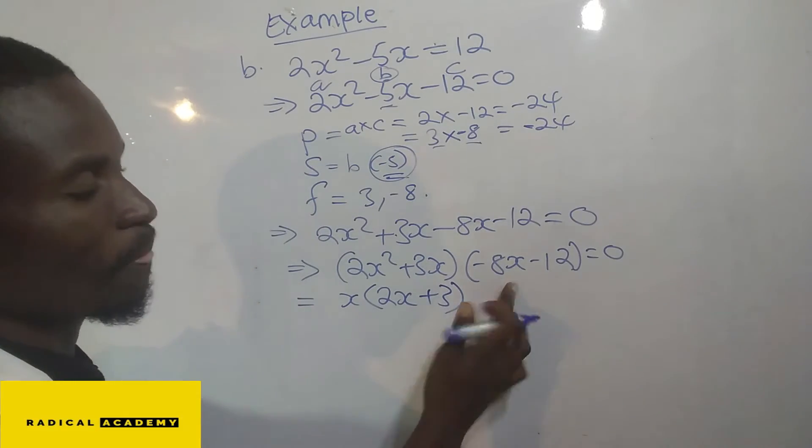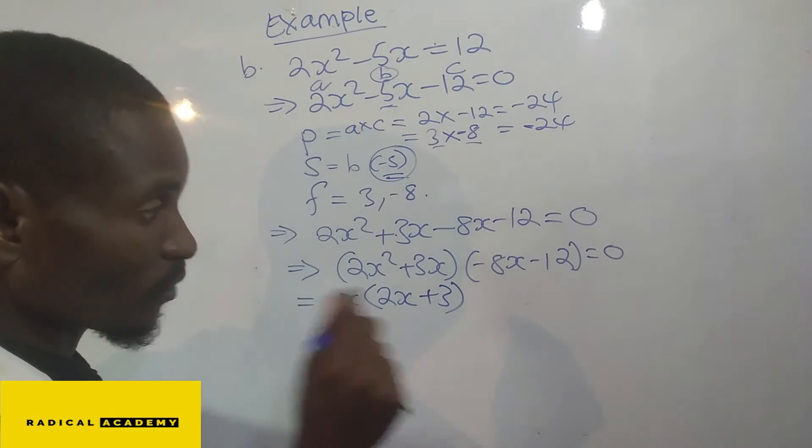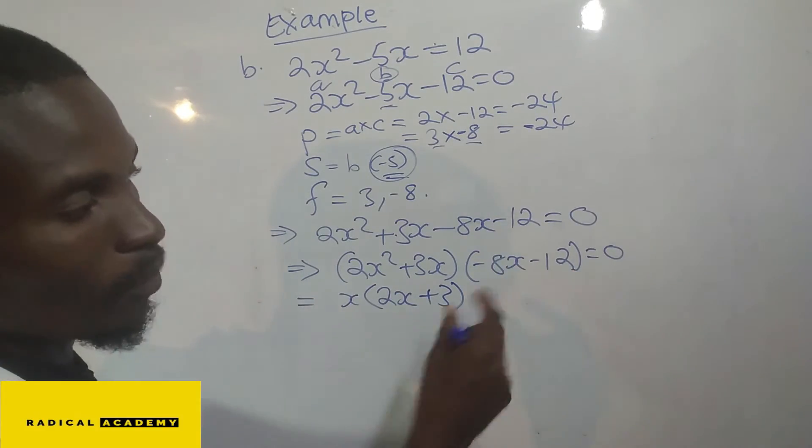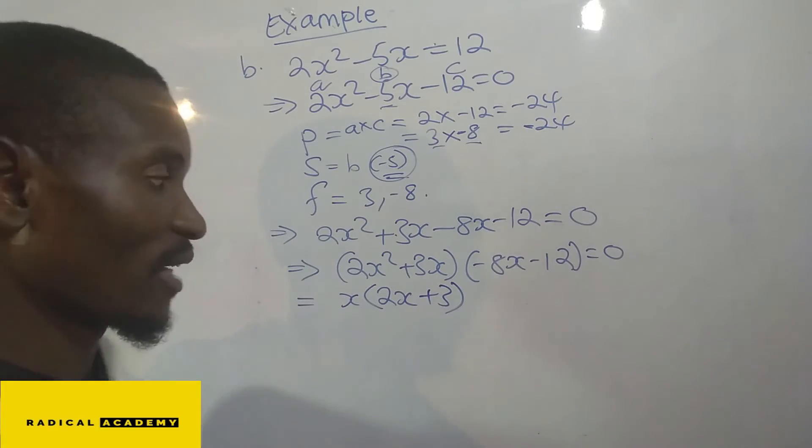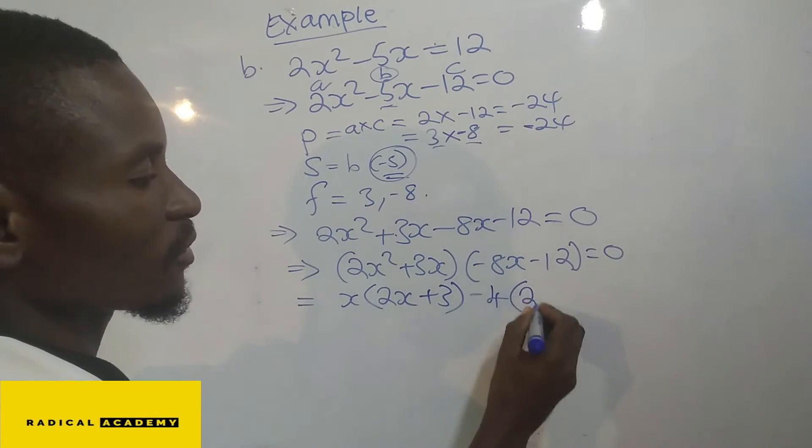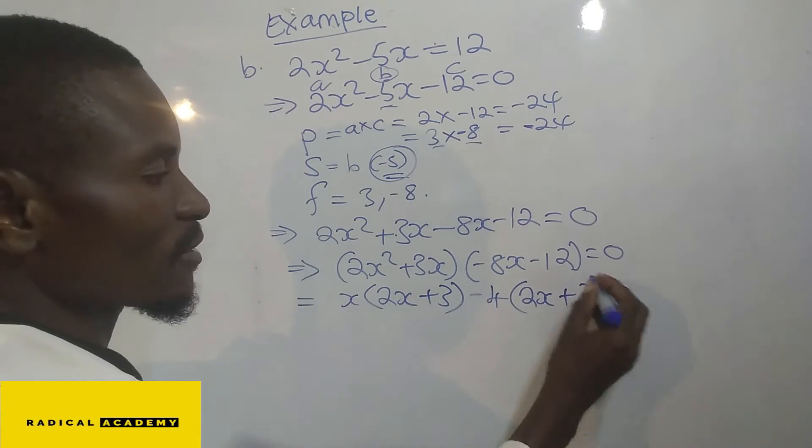Now what is common here? You discover that what is common is that 4 is common on both, and then also the negative sign. So negative 4 open the brackets now. 4 into that, you have now 2x, and then 4 into that, plus 3.